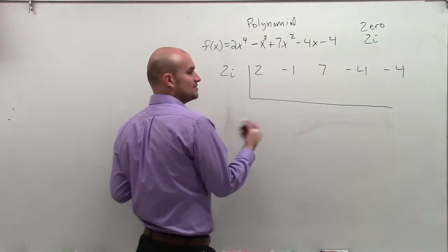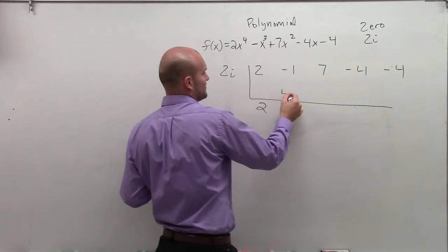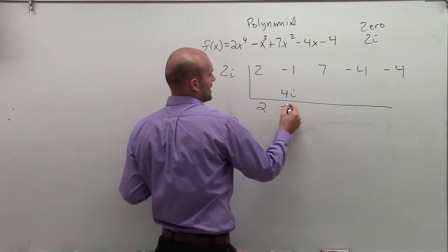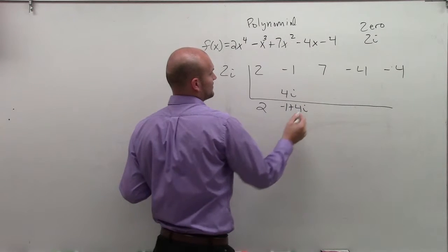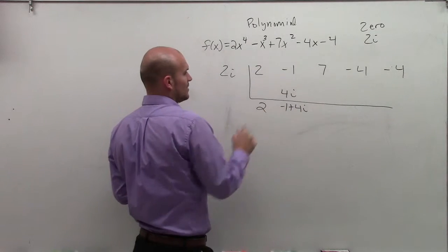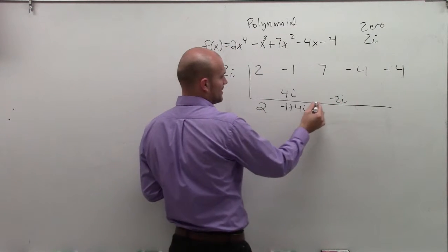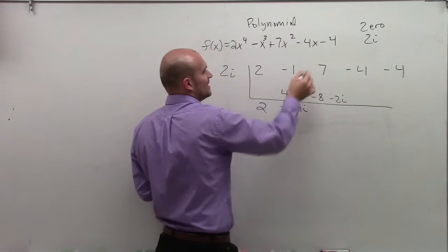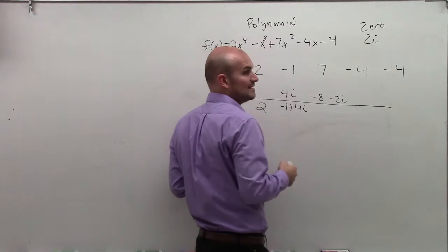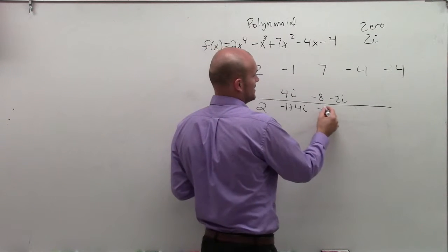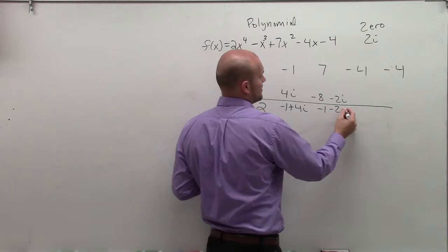So all I'm simply going to do is just practice. Bring down the 2. 2 times 2i is 4i. Negative 1 plus 4i when you add them up together. Negative 1 plus 4i times 2i is going to give me negative 2i, and that's going to become negative 8. Negative 8 plus 7, or negative 8 minus 2i plus 7, is negative 1 minus 2i.